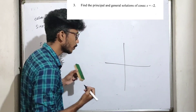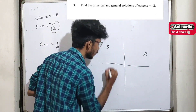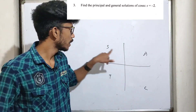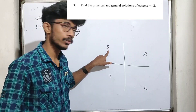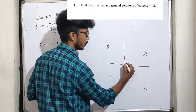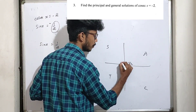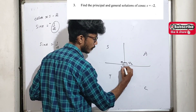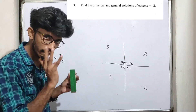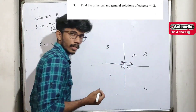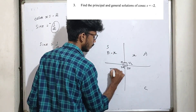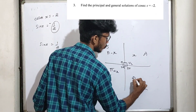What is the quadrant? We will use ASTC — A means all positive, S means sin is positive, T means tan is positive, C means cos is positive. The first quadrant is positive. The second quadrant is π minus x. The third quadrant is π plus x. The fourth quadrant is 2π minus x.